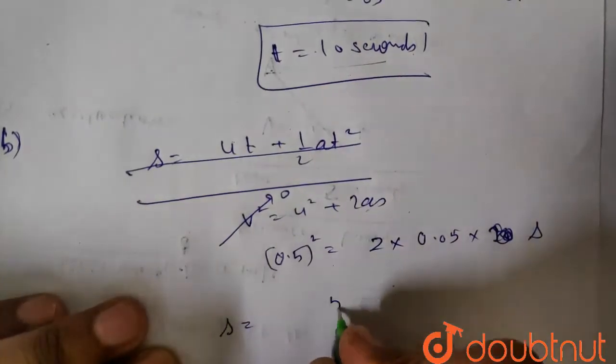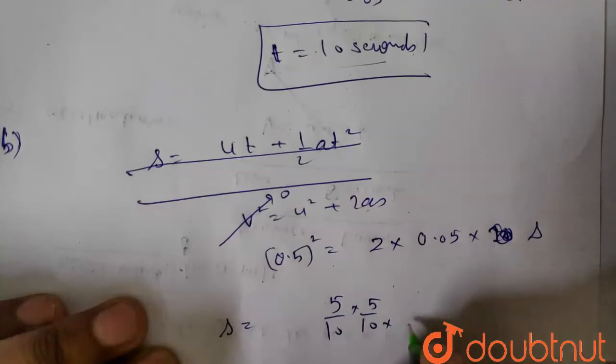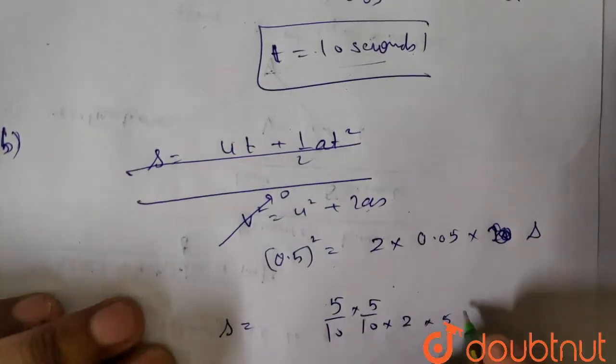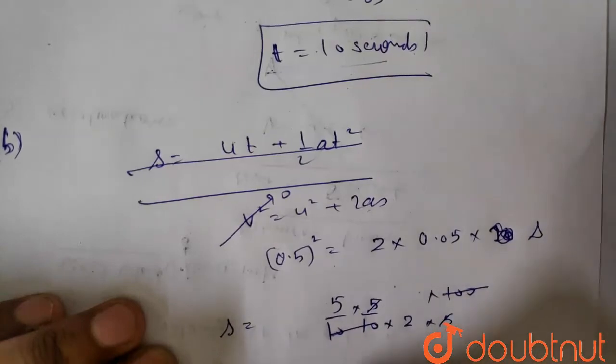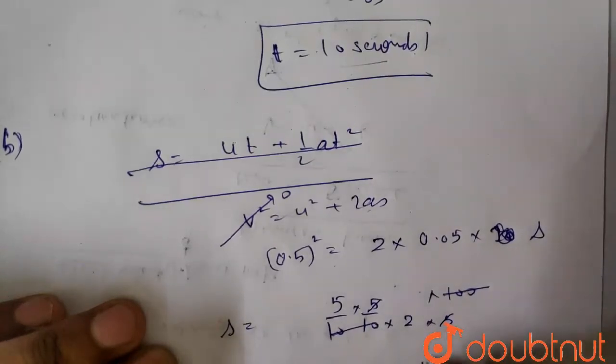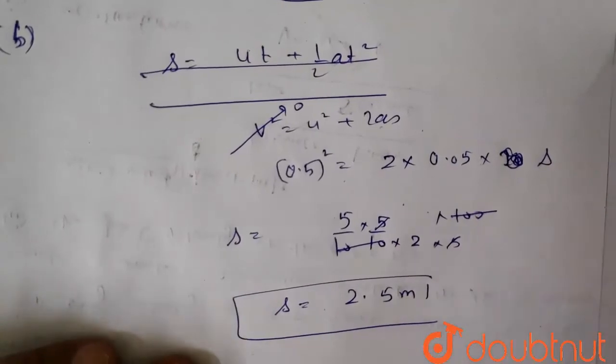So S is 5 by 10 into 5 by 10 into 2 into 5 by 100. 100-100 cancels, 5-5 cancels, then S is 2.5m. So how much distance travelled? 2.5m.